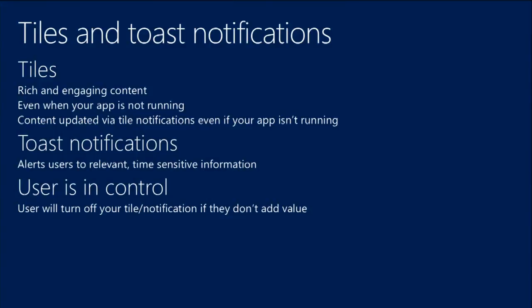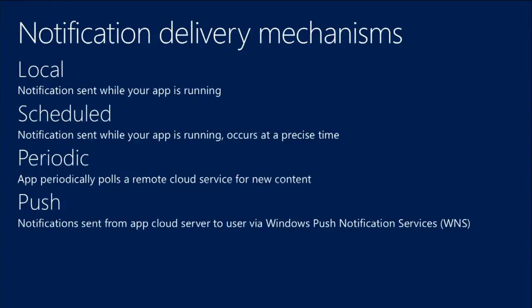Toast notifications pop down from the top right of the screen — a new form of the bottom-right pop-ups — designed to pass along additional information to users when they're focused on other things. The user is in control: there are settings for all these things, and you can turn them off on an app-by-app basis if you don't want them. A key thing in terms of application lifecycle: when your app is not on screen, it is not running.